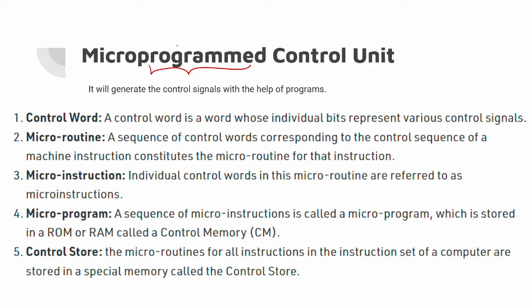So what do we mean by micro? There is an instruction — for example, ADD R1, R2, R3. This is a single instruction that the internal CPU executes. That single instruction is broken down into multiple micro instructions: micro instruction 1, micro instruction 2, micro instruction 3. The micro instructions are stored in a field.